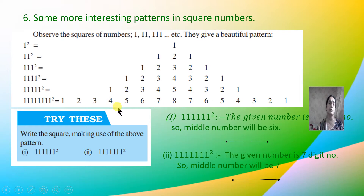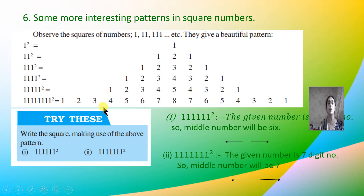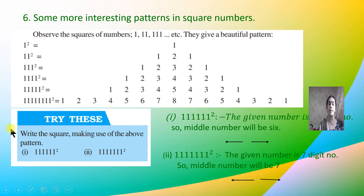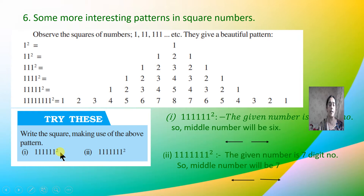Now using this pattern, write the square of the following numbers. The first one is 111111 — that is a 6-digit number. There are 6 digits, so the middle number will be 6. We go 1, 2, 3, 4, 5, 6 and then reverse to 5, 4, 3, 2, 1. The result is 12345654321.